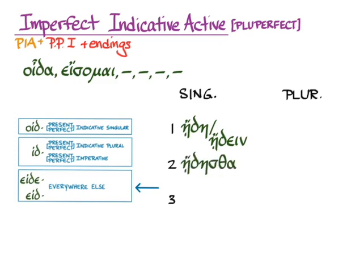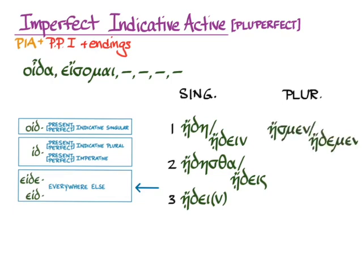Eideistha, again with a delta changed to a sigma, with the alternative eideis. In the third person singular, eidei or eidee with its nu movable. In the plural, eideimen or eidemen, again we get some change of the delta into a sigma, eideiste or eideite, and eideisan or eidesan.